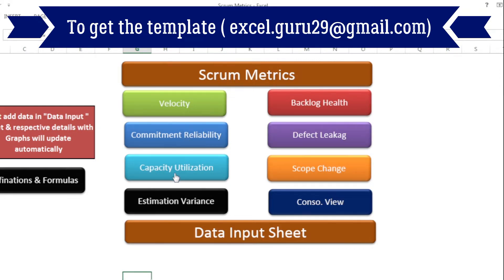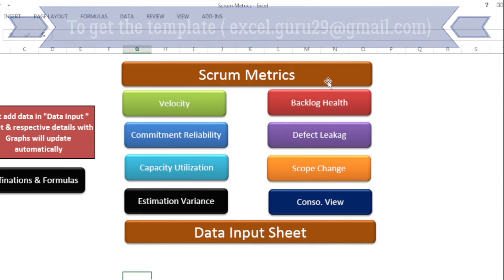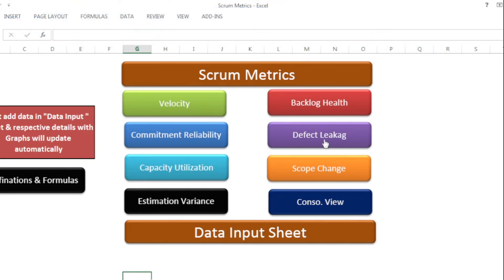commitment reliability, capacity utilization, estimation variance, backlog health, defect leakage, and scope change. But the thing is, maintaining or preparing these kinds of scrum metrics is itself a tough task because every scrum metric has a different concept and different ways of calculation,